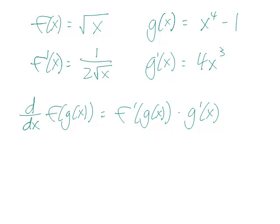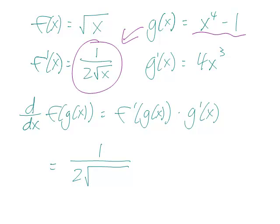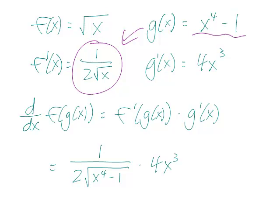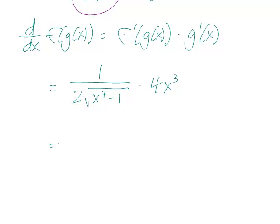Let's see, f prime is 1 over 2 root x, but instead of putting x in there, we want to put g in there, so it's 1 over 2 root of x to the 4th minus 1. That means you replace x in the square root with x to the 4th minus 1, times g prime of x is 4x cubed, and so we can combine them to get 4x cubed over 2 square root of x to the 4th minus 1.